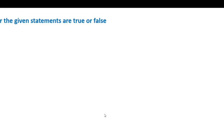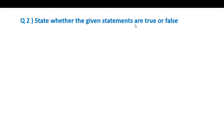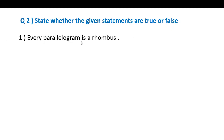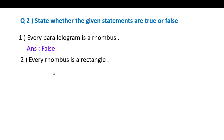Question 2. State whether the given statements are true or false. First statement: Every rhombus is a rectangle. A rectangle's angles are always right angles, but a rhombus's angles are not right angles. Therefore it is false.